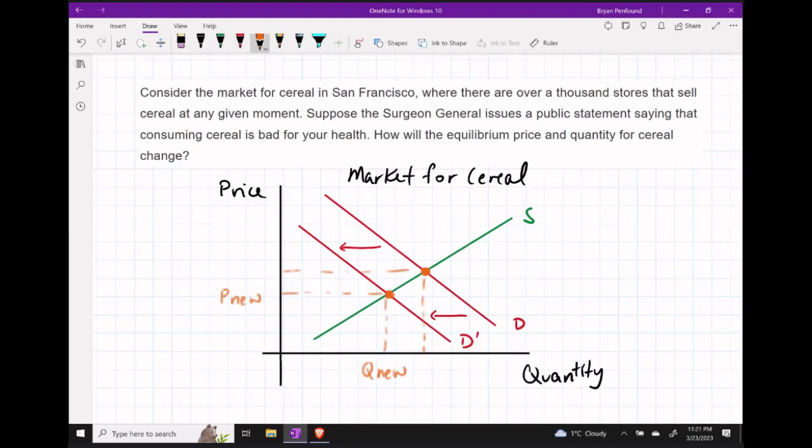When we take a look at where our new equilibrium point ends up, we notice that both price and quantity are going to fall.